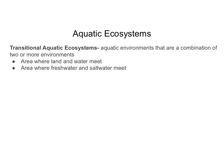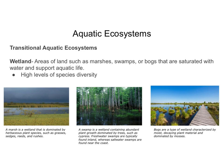Transitional aquatic ecosystems are aquatic environments that are a combination of two or more environments — either where land and water meet or where freshwater and saltwater meet. A wetland is an area of land such as marshes, swamps, or bogs that is saturated with water and supports aquatic life. Many species of fish, birds, and plants can live in wetlands.